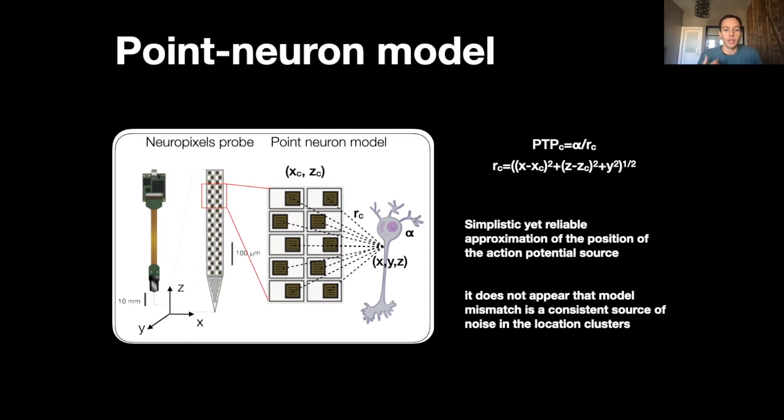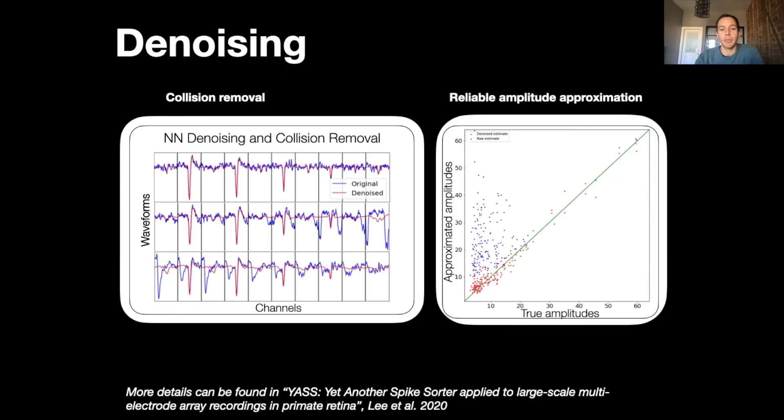Since our triangulation method relies on amplitudes of the spikes, it is necessary to denoise the waveforms to get their true amplitudes. So we use a neural net denoiser that is implemented in YASS. The left figure shows examples of raw waveforms in blue and the corresponding denoised waveforms in red. There are three waveforms, one on each line, for which we showed 10 channels and the waveforms are here flattened.